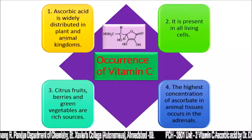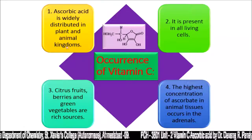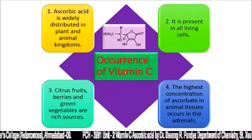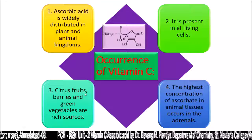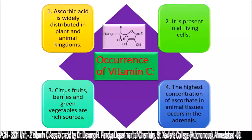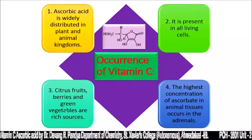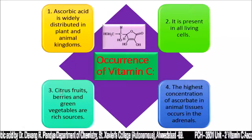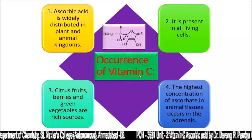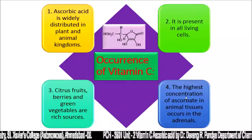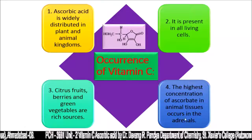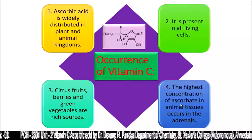Vitamin C, ascorbic acid, is widely distributed in the plant and animal kingdom and is present in all living cells. Citrus fruits, berries, and green vegetables are the rich sources of vitamin C, and deficiency leads to scurvy or bone-related issues. Therefore, we need to include citrus fruits, berries, and green vegetables in our diet. The highest concentration of ascorbate in animal tissues occurs in the adrenals.